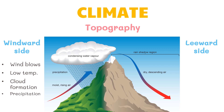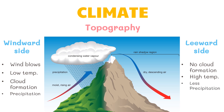On the leeward side of the mountain, there is no cloud formation. The cold air mass starts to absorb heat and becomes warm and dry. As a result, the air near the leeward side becomes dry and has less precipitation. The dry region on the leeward side is called a rain shadow. Vegetation in this region includes desert plants and grassland.